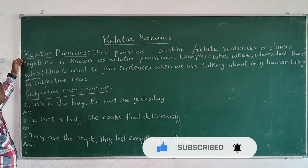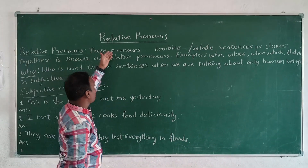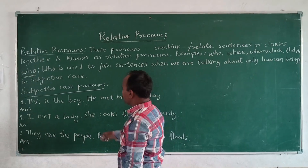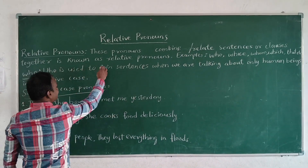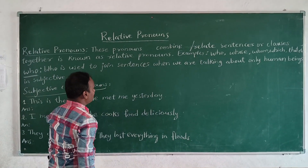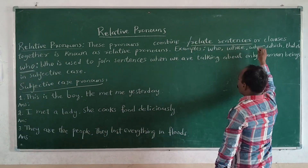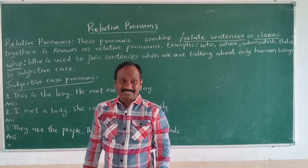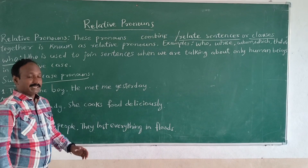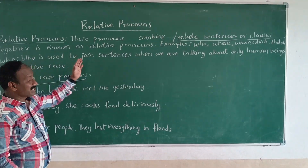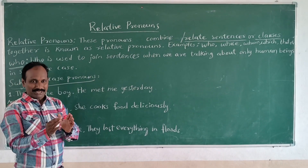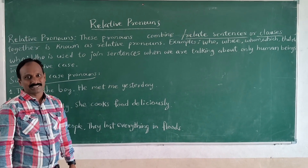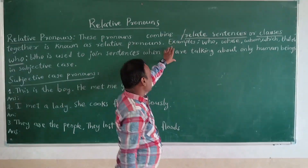And now here we will see the definition. Relative pronouns: these pronouns combine or relate sentences or clauses together. So here they relate sentences or clauses. A sentence is a group of words. We use these relative pronouns to join some sentences. And now we will see some examples.